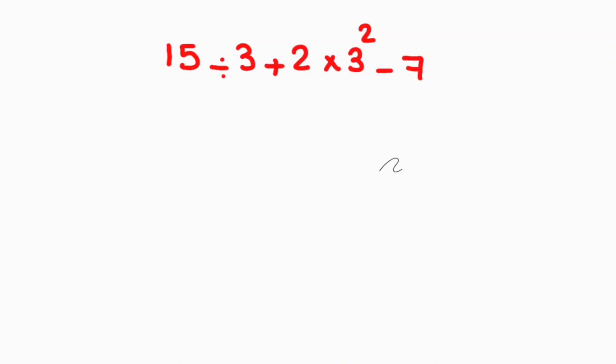Hey guys and welcome to today's video. Please subscribe to our channel if you like this video. We have 15 divided by 3 plus 2 times 3 to the power of 2 minus 7. So 15 divided by 3 gives us 5.